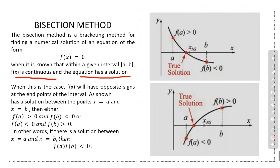If the equation has a solution between x = a and x = b, then either f(a) > 0 and f(b) < 0, or f(a) < 0 and f(b) > 0. So we have two possibilities for our function.